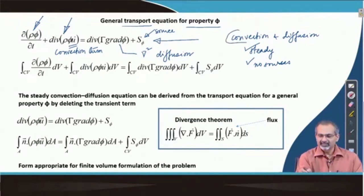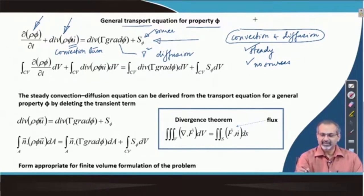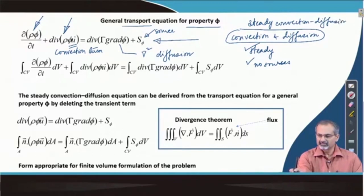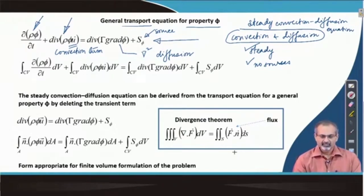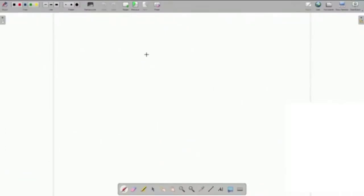It can then become a transport equation involving only convection and diffusion of the property. In such a situation, we would call it a steady convection-diffusion equation. We will just take a small detour at this point and come back to this slide once again in a few minutes.